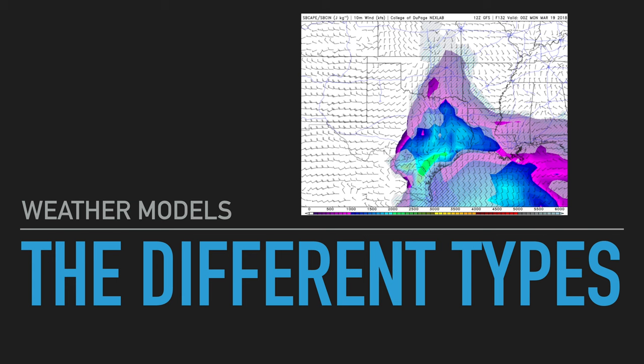Today's lesson is on the different types of weather models. We're going to differentiate what's an ensemble, what's high-res, what's low-res, what's long-range, and mid-range, and then talk about how to use each different type for what it does best.